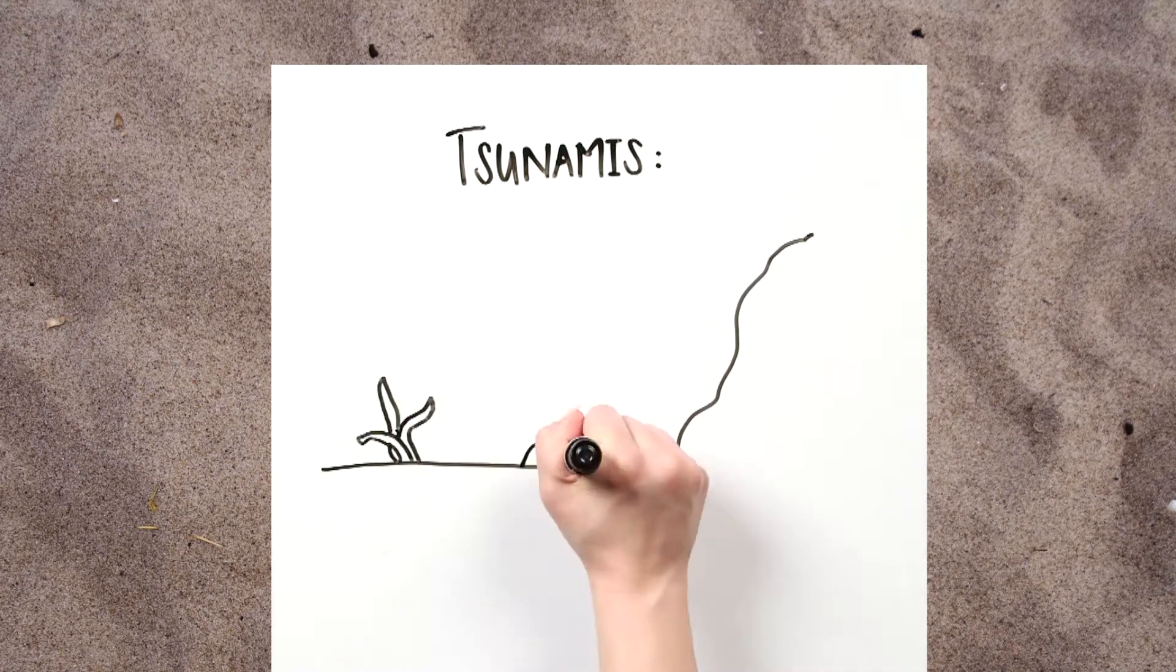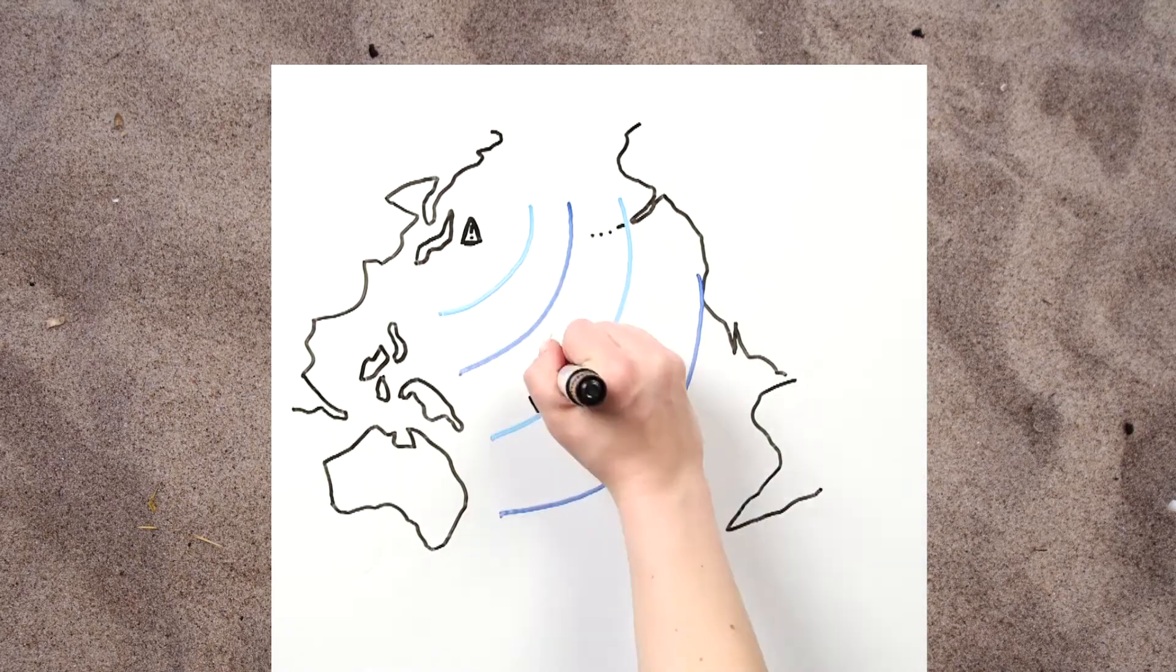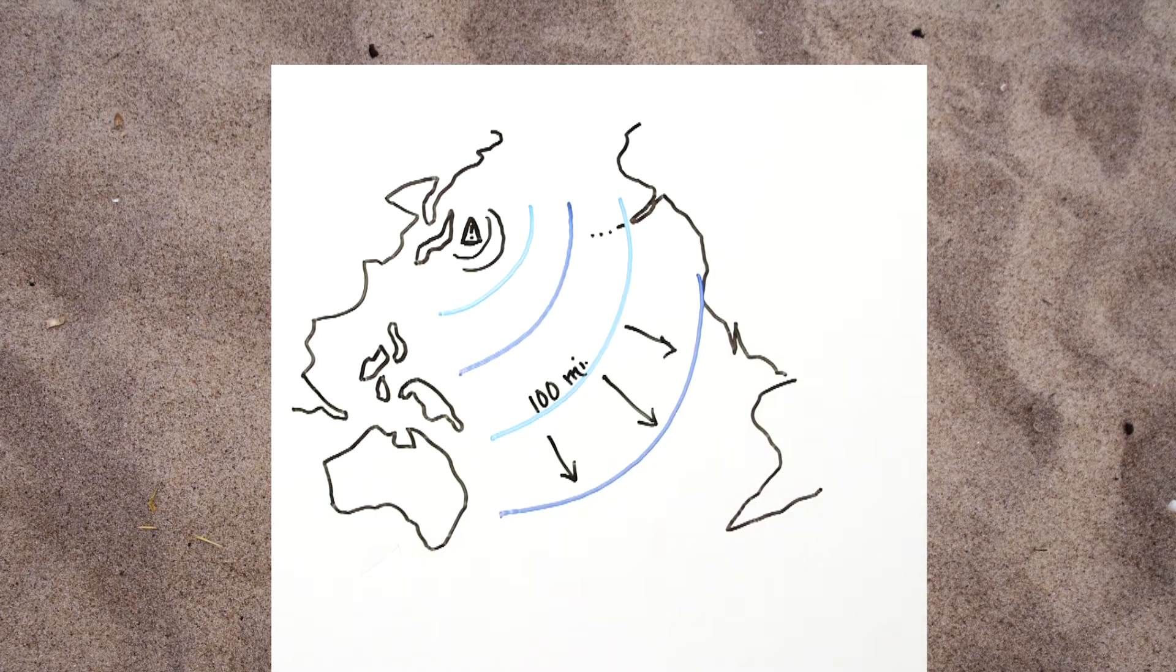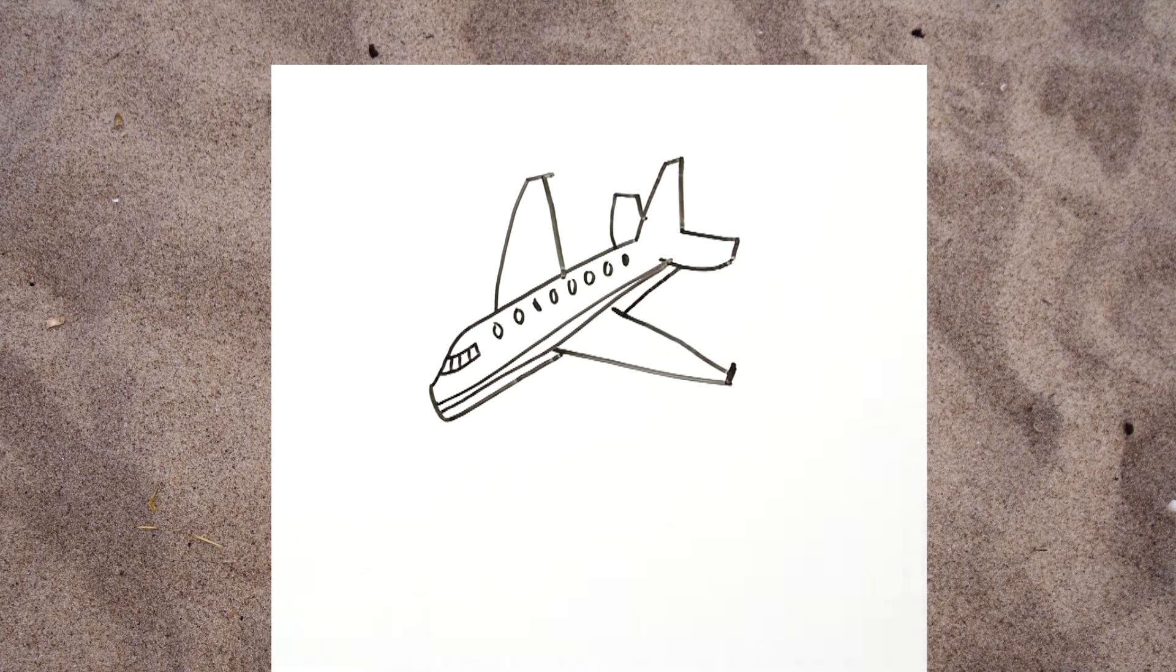Unlike regular ocean waves, a tsunami acts more like a fast-rising flood, with waves spanning hundreds of miles and traveling up to 500 miles per hour. That's as fast as a commercial jet.